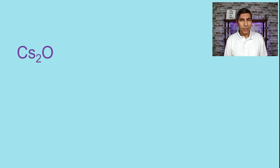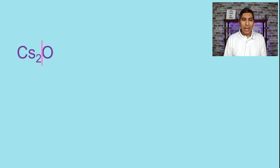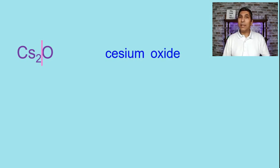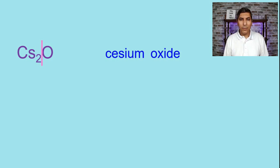Let's try Cs2O. Split it down the middle. Cs is the symbol for cesium, and O is the symbol for oxide. Because cesium is always plus 1 and it's not a transition metal, there's no need for a Roman numeral. So cesium oxide is the name.